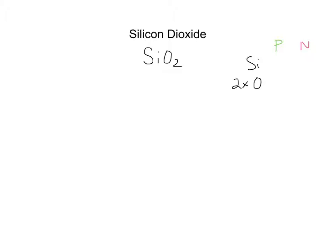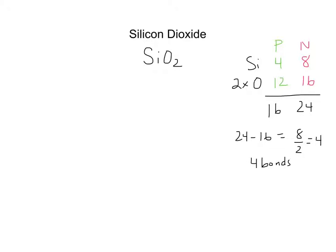Each silicon has four valence electrons and needs eight. Each oxygen has six valence electrons, and since there are two of them, that means twelve present; and it needs eight apiece, so that's sixteen needed. If we tally these amounts we get sixteen total electrons present and twenty-four total needed. To determine the number of bonds, we do the same analysis as with ammonia: twenty-four minus sixteen is eight, and we divide by two because two electrons are needed per bond, giving us four. So four bonds need to form.